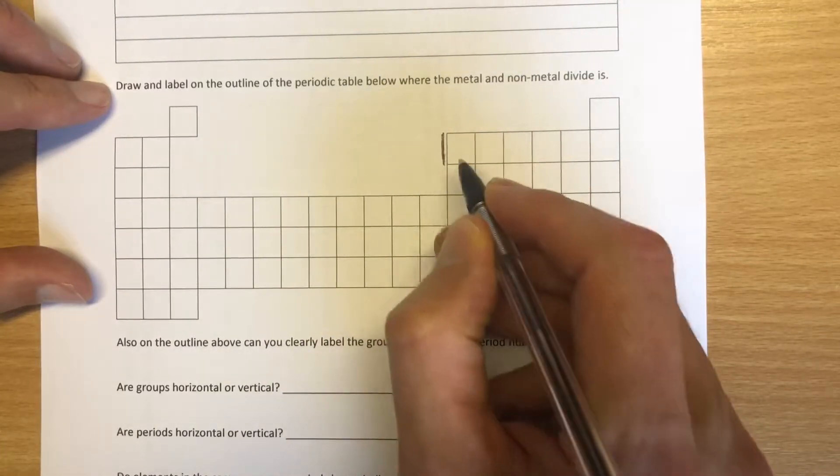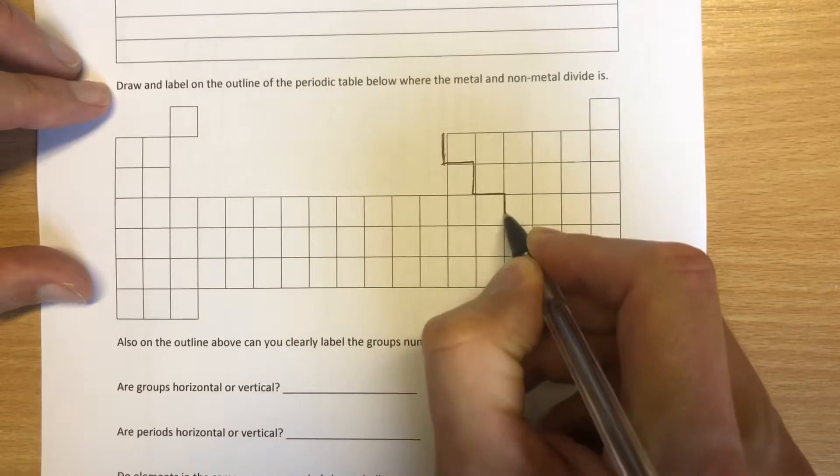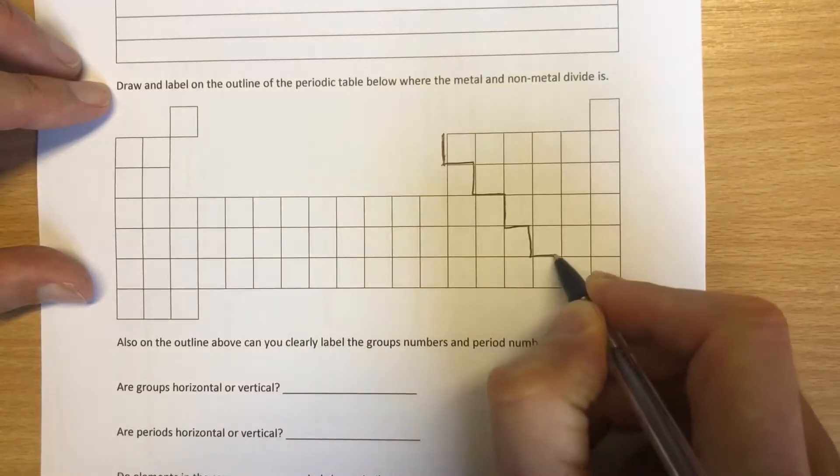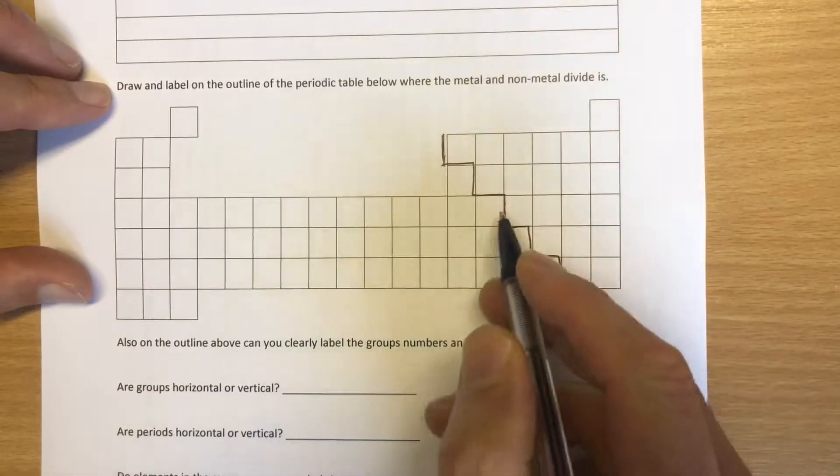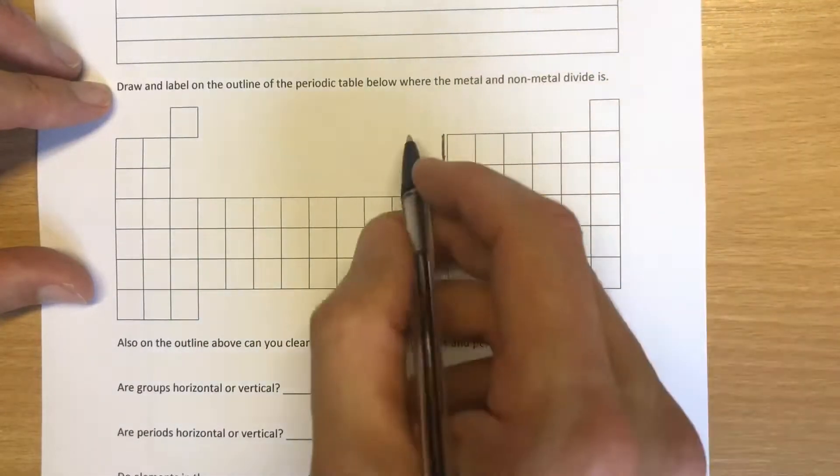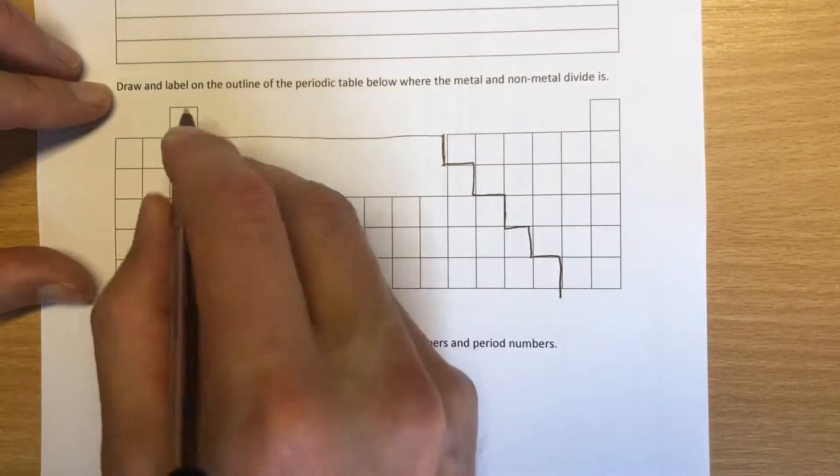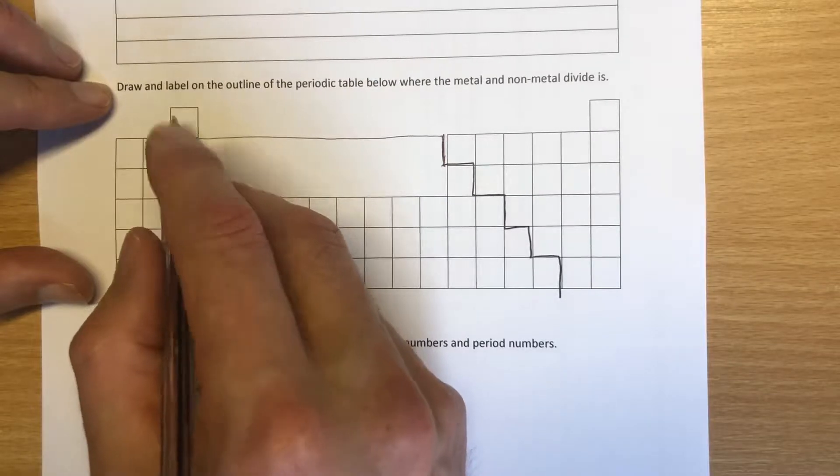Once we remember that, all we need to remember is it steps down like so. This is the dividing line between metals and non-metals. The metals are this side and the non-metals are this side. Just extend it over here so it goes beneath hydrogen as well, because hydrogen is a non-metal.